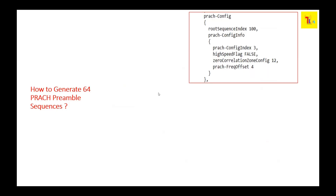It's very important to understand that there are 64 PRACH preambles. Now the question is: how exactly are those 64 PRACH preambles generated? We have already discussed PRACH config index and PRACH frequency offset. We are going to discuss root sequence index, high speed flag, and zero correlation zone, which are going to help in generating the 64 PRACH preamble sequence.